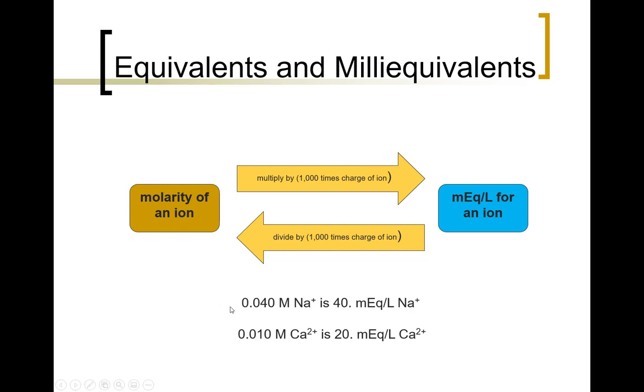Let's say, for example, we have a solution that is 0.040 molar sodium. What do we do? We take this number and multiply it by 1000 times the charge of sodium. So 1000 times 1 is simply 1000. So 0.040 times 1000 is 40 milliequivalents per liter.